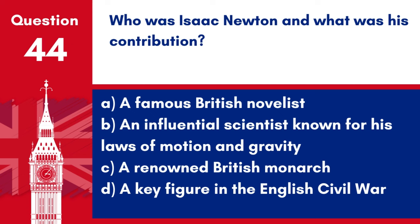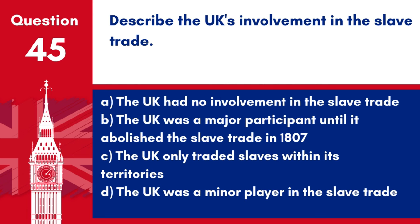Question 44. Who was Isaac Newton, and what was his contribution? A. A famous British novelist. B. An influential scientist, known for his laws of motion and gravity. C. A renowned British monarch. D. A key figure in the English Civil War. Answer: B. An influential scientist, known for his laws of motion and gravity. Isaac Newton was a pivotal figure in science, known for formulating the laws of motion and universal gravitation.